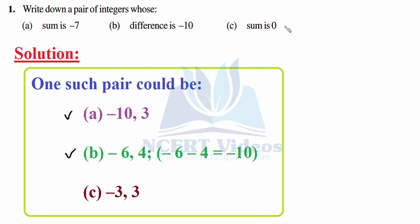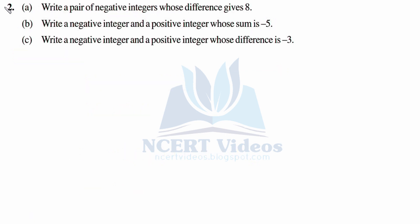Part c: Sum is 0. You can take any number — just make the signs opposite. If you take minus 3, you take plus 3; they cancel out each other. They are simply additive inverses of each other. That was question 1. Question 2: (a) Write a pair of negative integers whose difference gives 8.